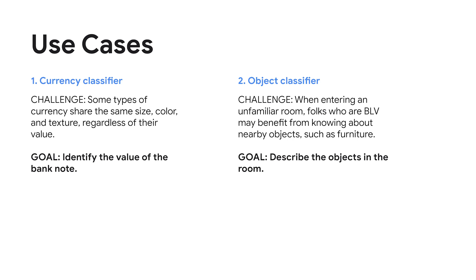For objects, imagine that you can't see and you're going into a room that you're unfamiliar with. You might want to know what's in that room — what kind of furniture — so you can understand what kind of room it is, like a living room versus an office.